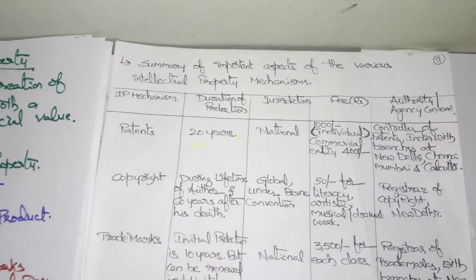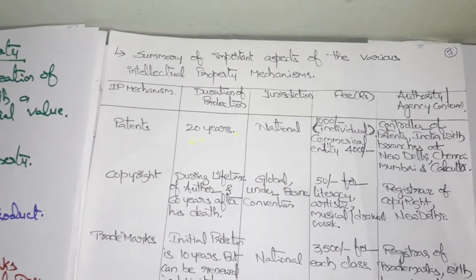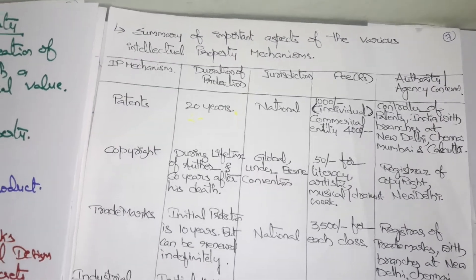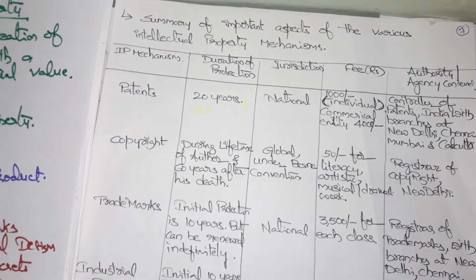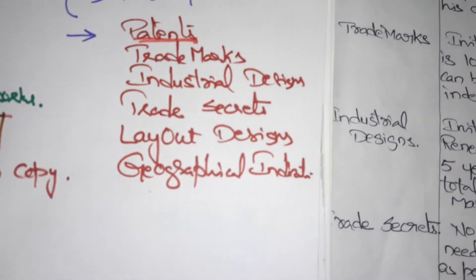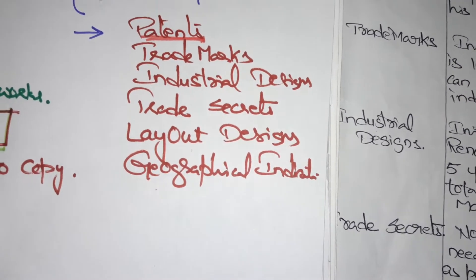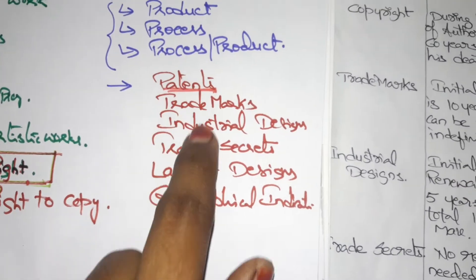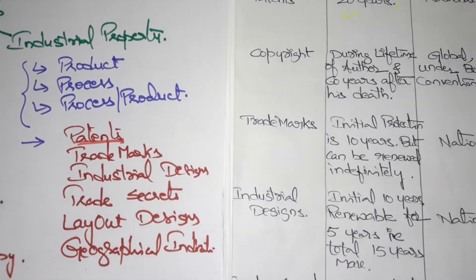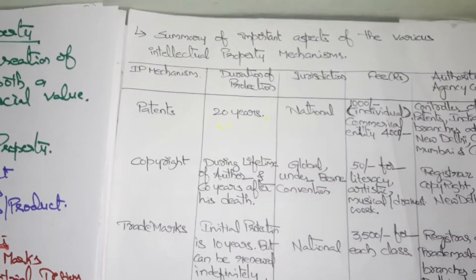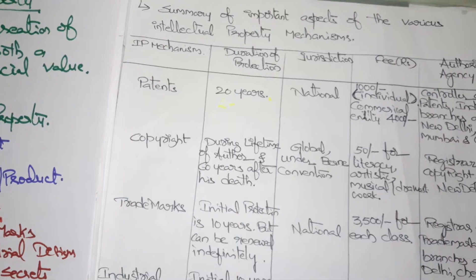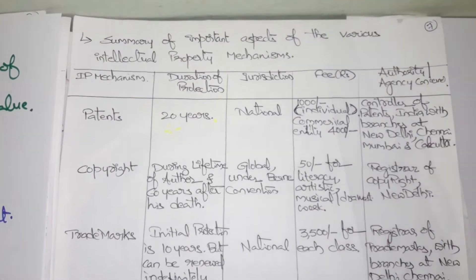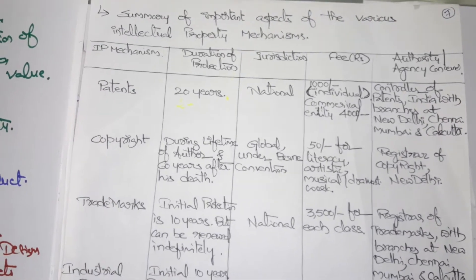We have seen the introduction of intellectual property. Now we will see a summary of important aspects of the various intellectual property mechanisms — patents, trademarks, industrial designs, trade secrets, layout designs, and geographical indications. We will cover duration of protection, jurisdiction, fee, and the concerned authority or agency.